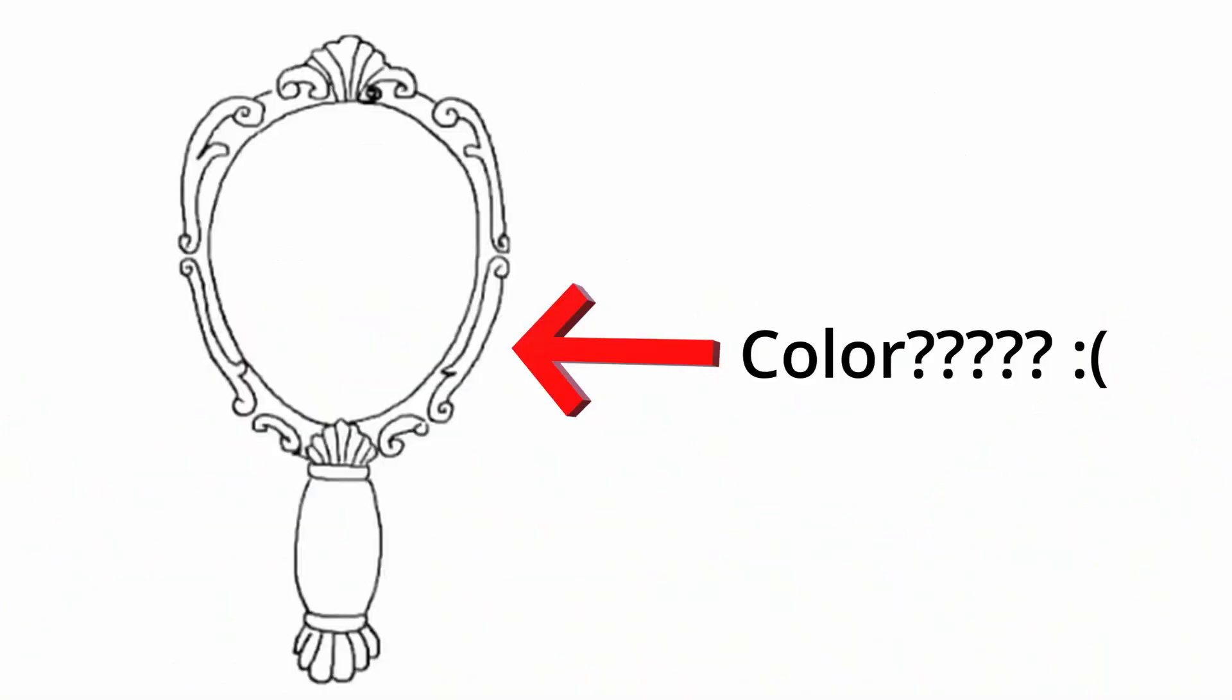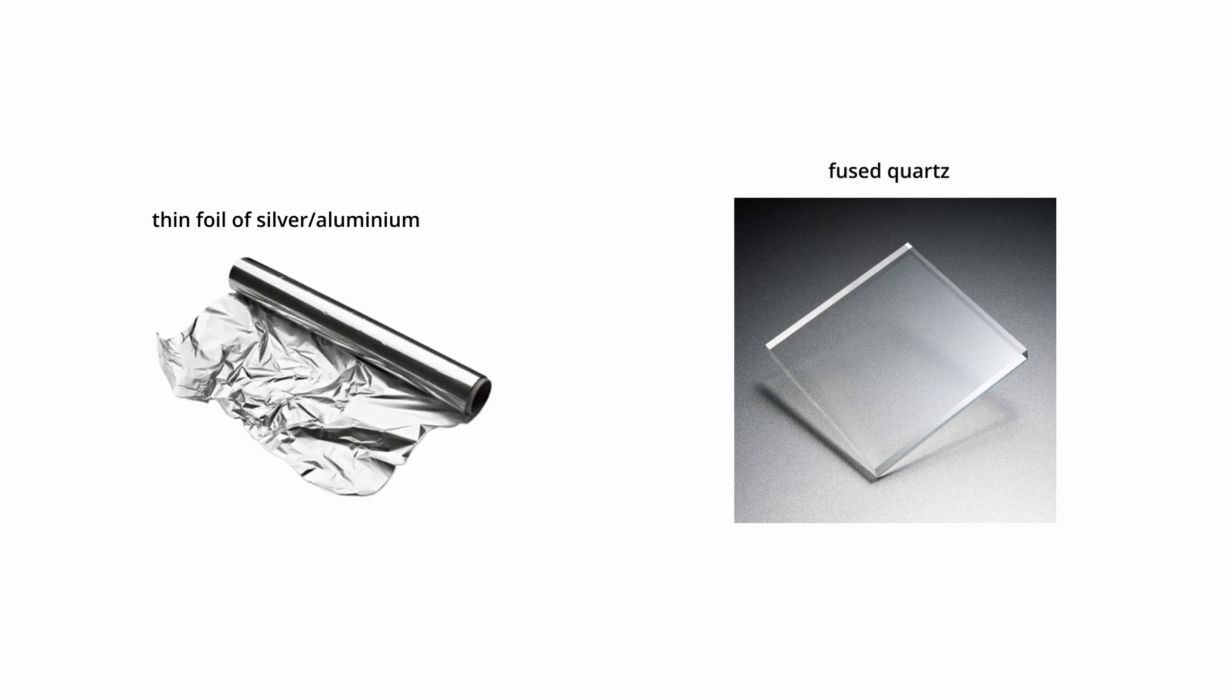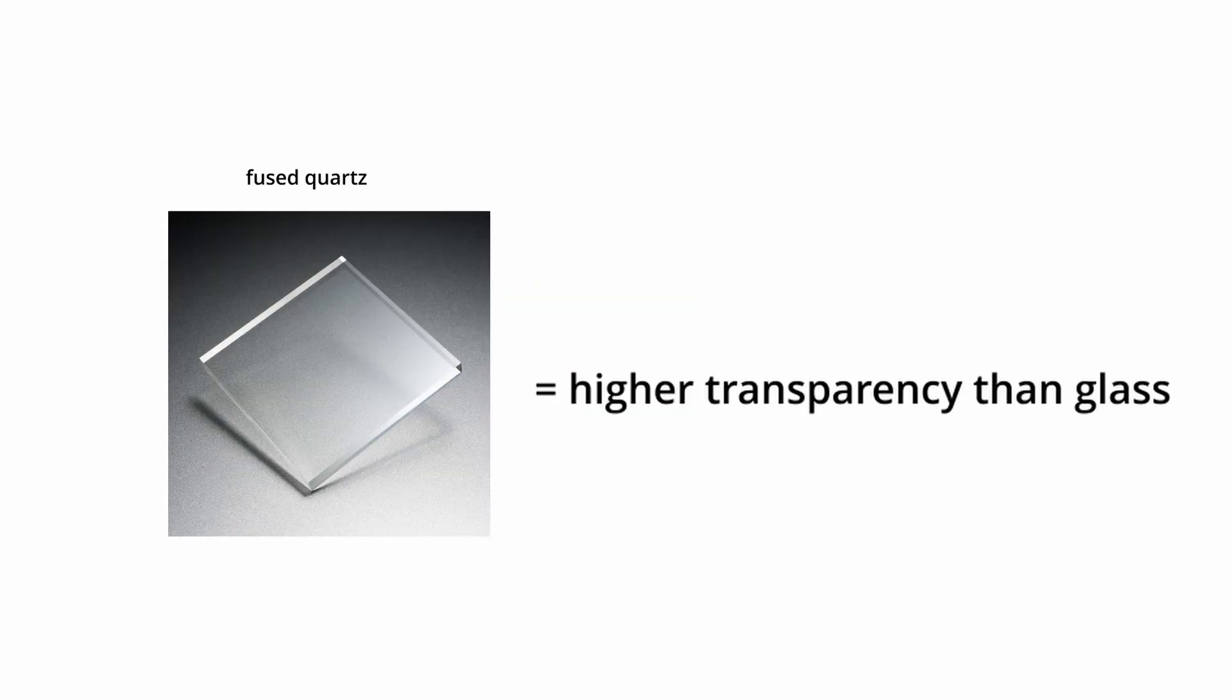So what is the real color of a mirror? Well, in a modern mirror, a thin foil of either aluminum or silver is stuck to a special plane of glass known as fused quartz. This fused quartz has a higher transparency than glass, making it more suitable for a mirror.